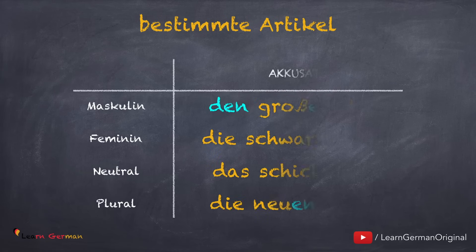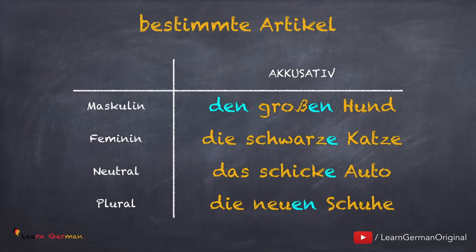Hier ist eine Übersicht: bestimmte Artikel im Akkusativ. Wie schon gesagt, im Maskulin bekommt das Adjektiv die Endung -en: den großen Hund. Für alle anderen Artikel sind die Endungen gleich wie im Nominativ: Feminin die schwarze Katze, Neutrum das schicke Auto, Plural die neuen Schuhe.